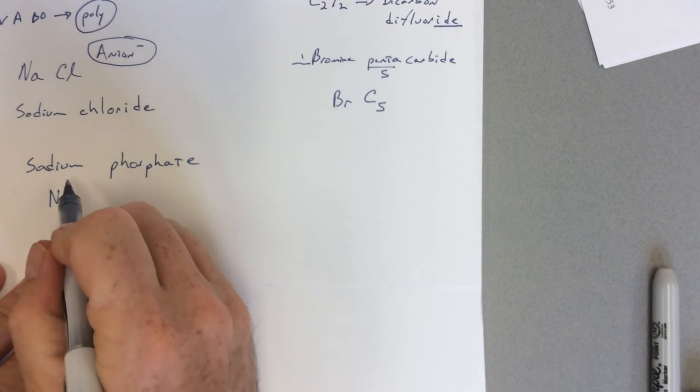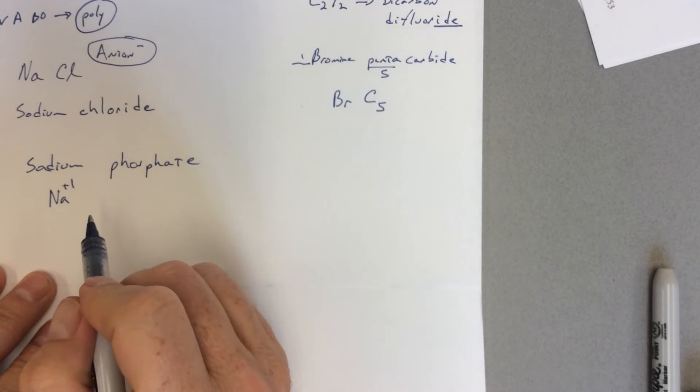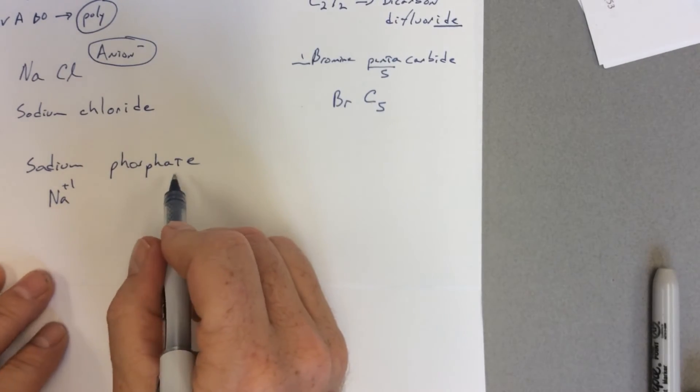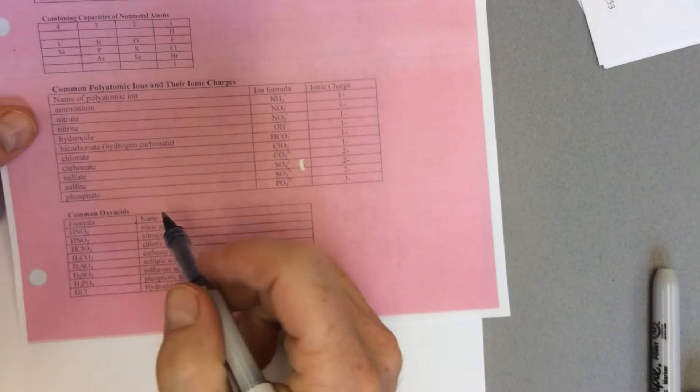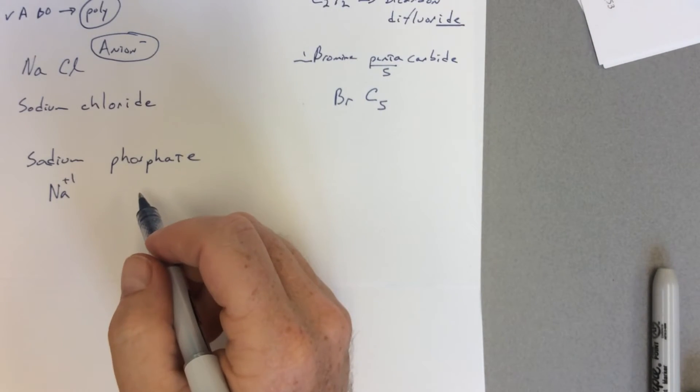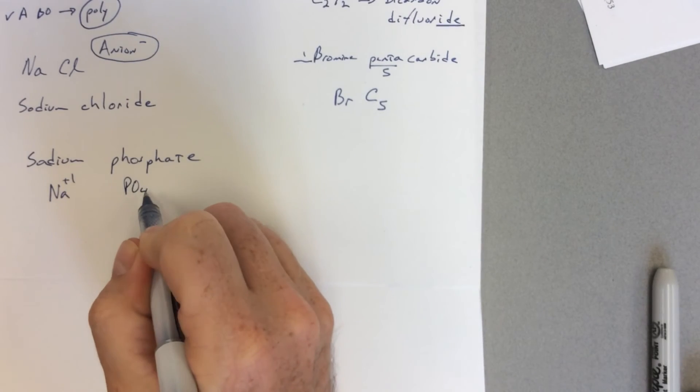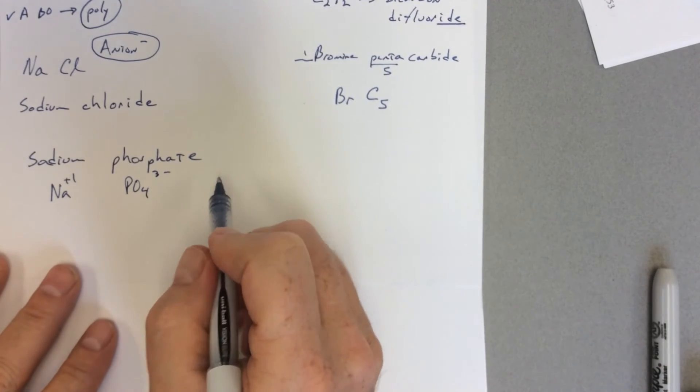And we see that sodium is in family number one, so it's a +1. It has lost one electron. You look up phosphate, so you look right to your pink sheet—this is what I'm looking to off camera. I'm looking literally at the pink sheet here. I'm going to look up phosphate. Phosphate is PO4, and it's kind of hard to see but it is a 3-.